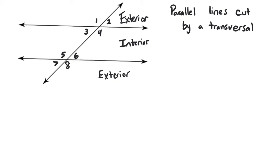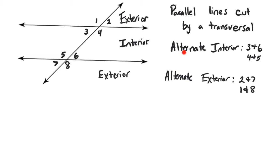So to write out the examples: alternate interior angles are three and six, and four and five. Alternate exterior angles are one and eight, and two and seven. The important thing to remember is that any alternate interior pairs are congruent to each other, and any alternate exterior pairs are also congruent to each other. So if angle eight was 130 degrees, then angle one is also 130 degrees — those are alternate exterior angles and they're congruent. And then seven would be 50 degrees because it's a linear pair that makes 180 degrees — 180 minus 130 equals 50. So seven and two are both 50 degrees, being alternate exterior angles congruent to each other.